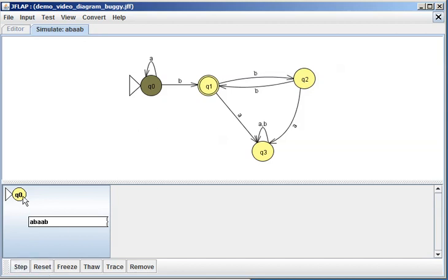So we're at state Q0, and we take a step, and we have that first A. So we should stay at Q0. So let's take a step, and sure enough, we're still at Q0, and now the next letter to process is a B.